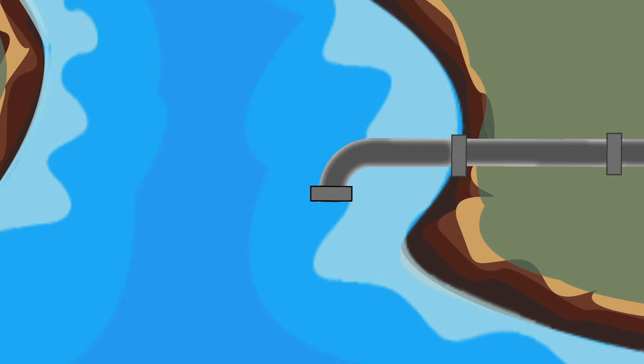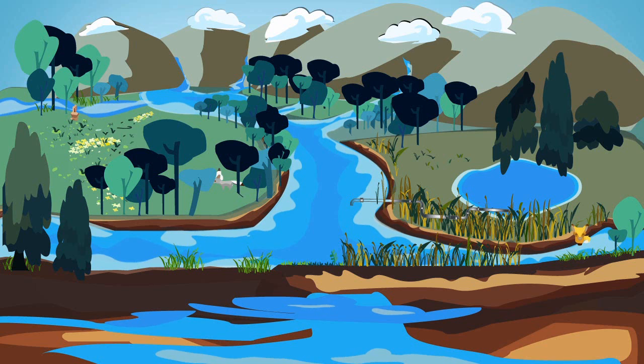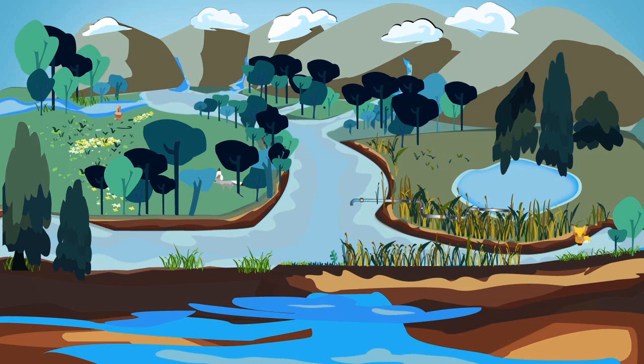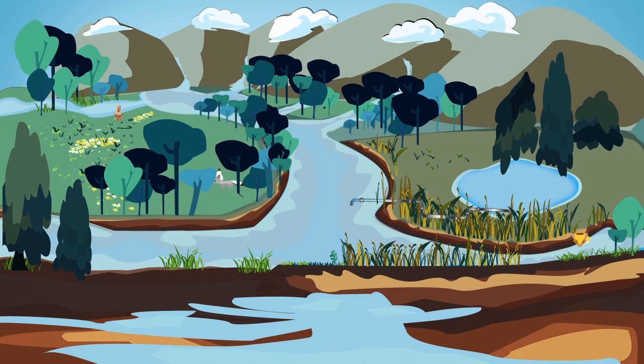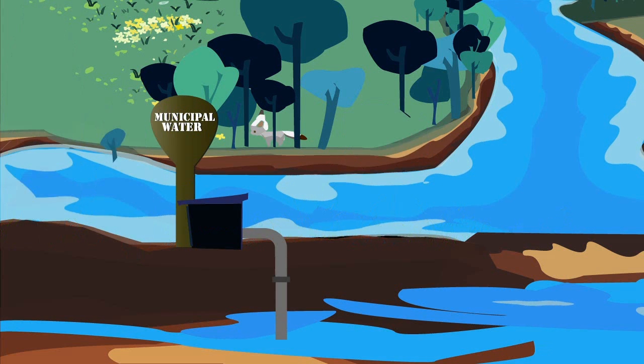It starts here at the source. In Pennsylvania, our source water can be from surface water like our rivers, lakes, and streams, or groundwater, the aquifers that lie beneath the earth. Public water suppliers tap into these sources to provide us with our drinking water.